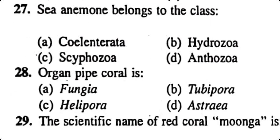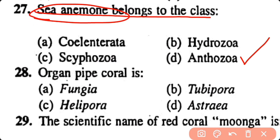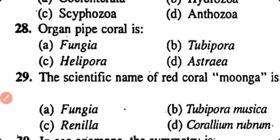Question number 27. The sea anemone belongs to the class: Cnidaria, Hydrozoa, Scyphozoa, Anthozoa. Correct answer is option D. Sea anemone belongs to the class Anthozoa.